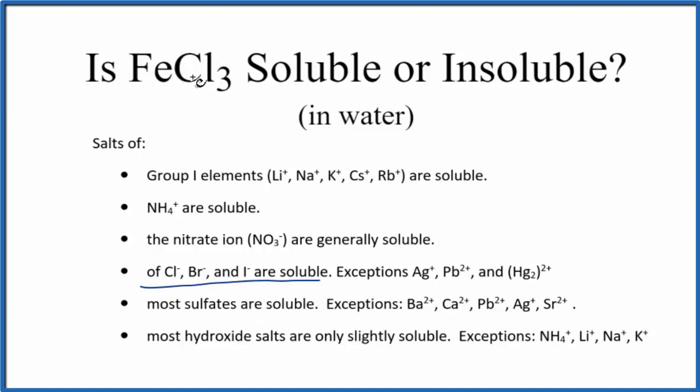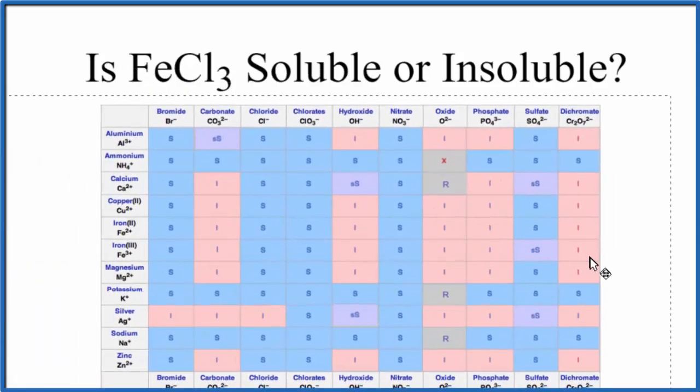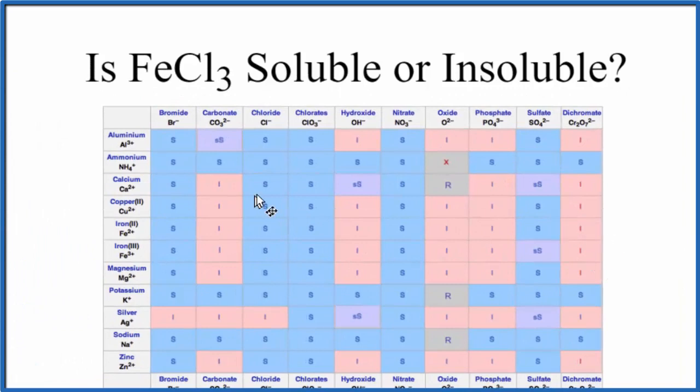Another way we could do this is to look at a solubility chart. Here's a solubility chart. We know that iron is going to be iron(III) because if we look at the chloride ion on the periodic table, chlorine forms 1- ions.